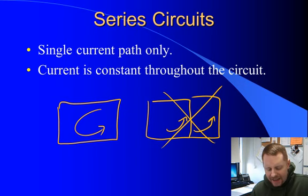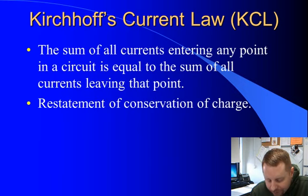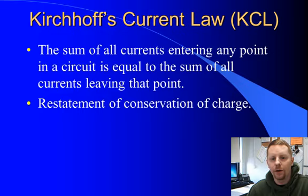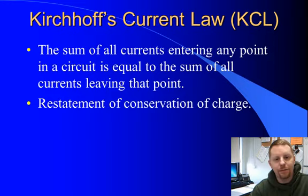In a series circuit, the current is constant throughout. Anywhere you look, the current going in is equal to the current going out — it is always the same anywhere in that circuit. We're going to use Kirchhoff's Current Law, or KCL, which says that the sum of all currents entering any part of the circuit equals the sum of all currents leaving. If 5 amps comes in, 5 amps must go out. This is really just a restatement of the law of conservation of charge.